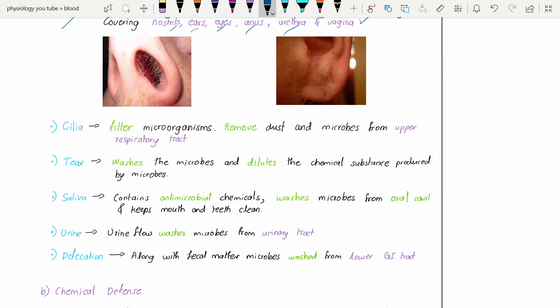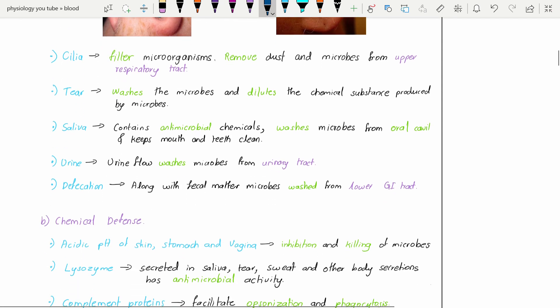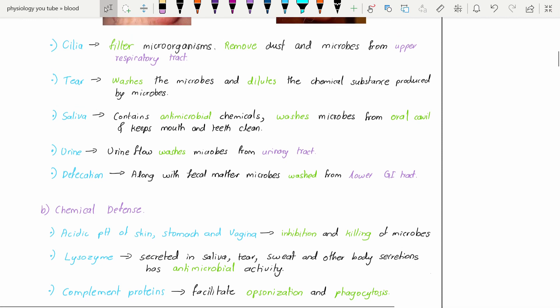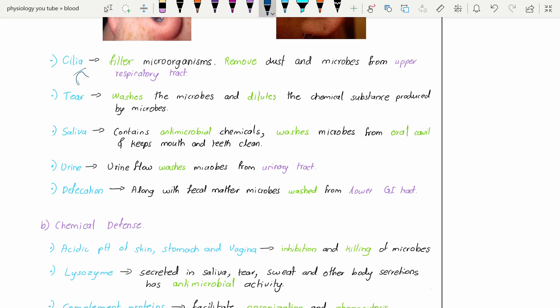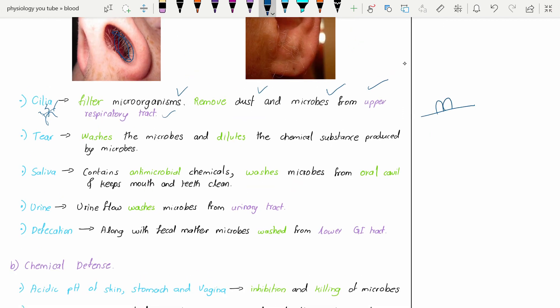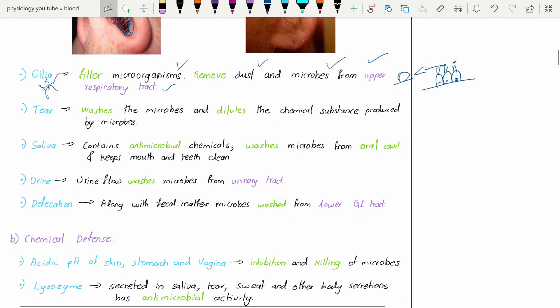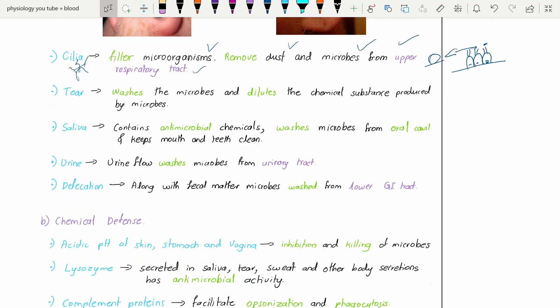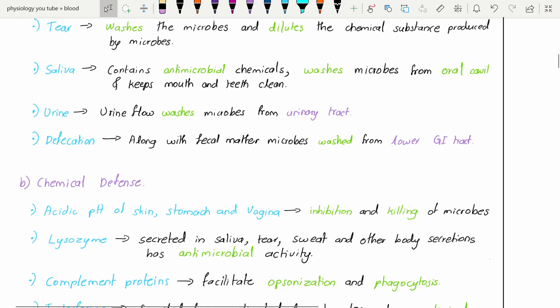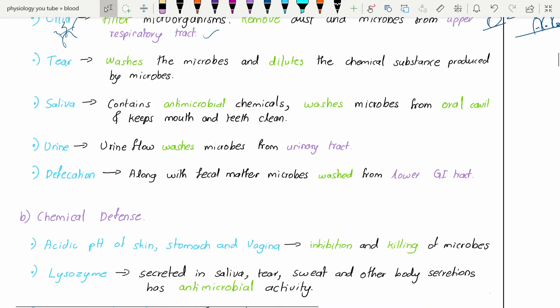You can see how tiny they are. Cilia - these are just hair-like things present over the cell surface. These filter the microorganisms and remove the dust and microbes from the upper respiratory tract. The cilia move towards the oral cavity so that once the mucus moves towards the oral cavity we can spit it outside, removing those useless things from the respiratory tract.